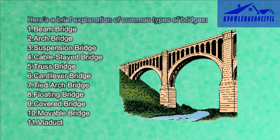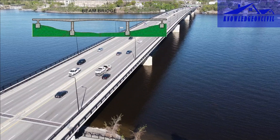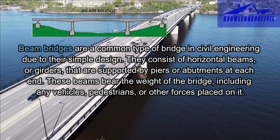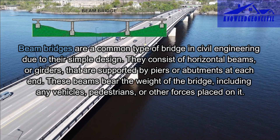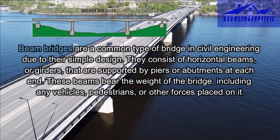Now let's study each bridge structure in detail. Beam bridges are a common type of bridge in civil engineering due to their simple design. They consist of horizontal beams or girders that are supported by piers or abutments at each end. These beams bear the weight of the bridge, including any vehicles, pedestrians, or other forces placed on it.